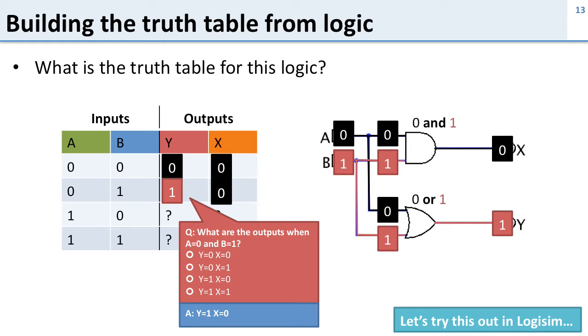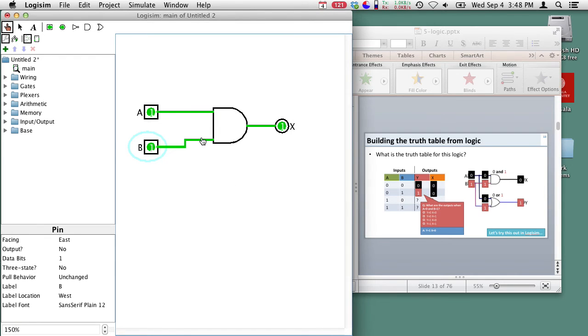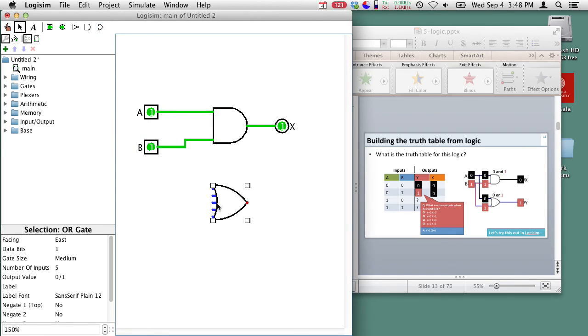Now let's try this out in Logisim. Here's Logisim. We already have our AND gate put together. Let's go ahead and add an OR gate to it. We've got too many inputs for our OR gate here, so I'll change that to be just two inputs, and now I need to hook it up.